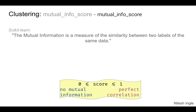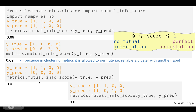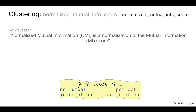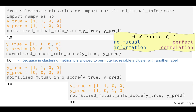The mutual information score, seen earlier, identifies the similarity between two clustering label sets. The implementation is sklearn.metrics.mutual_info_score with y_true and y_pred. Permutations are acceptable — clusters labeled differently are fine as long as there's no mix-up of data points between clusters, which gives a higher score; a mix-up causes the score to drop toward zero. The normalized mutual information score works the same way, but with 'normalized_' prepended to the method name.